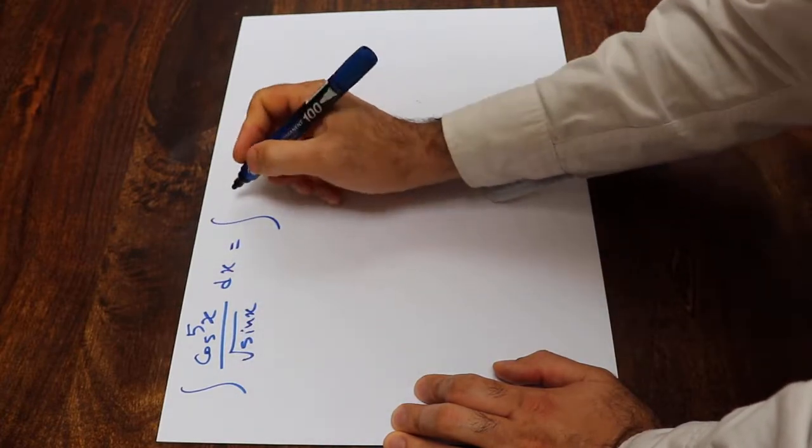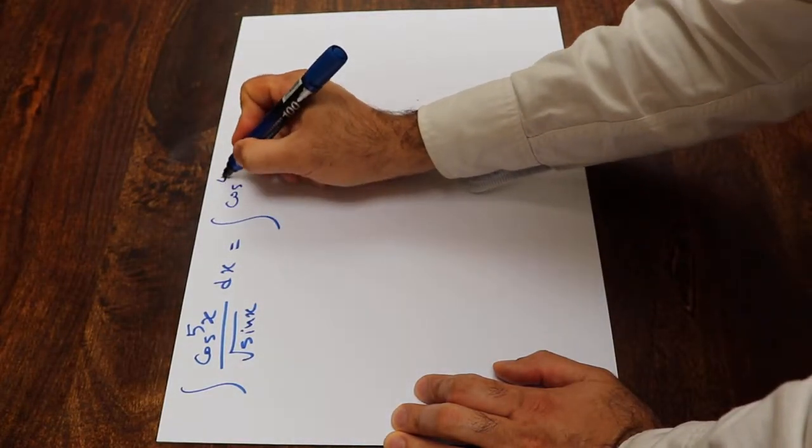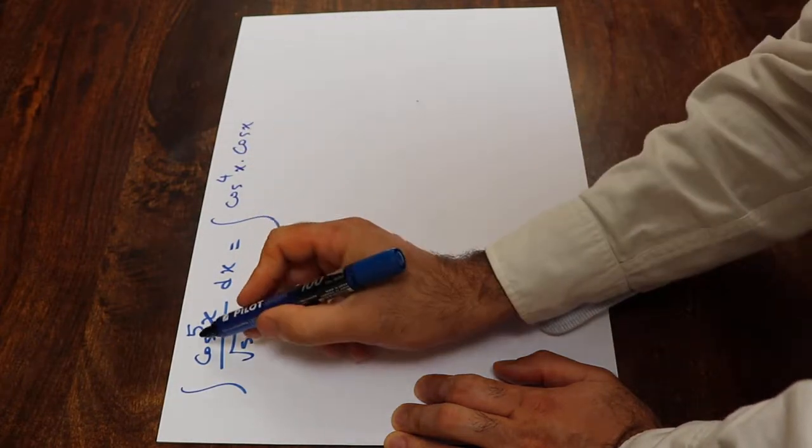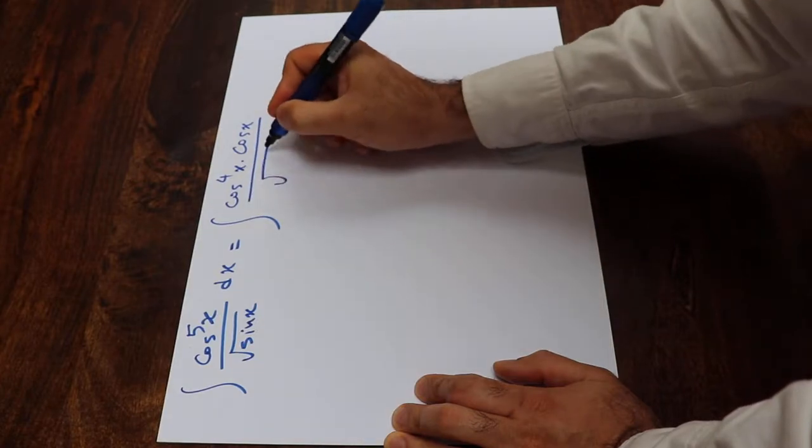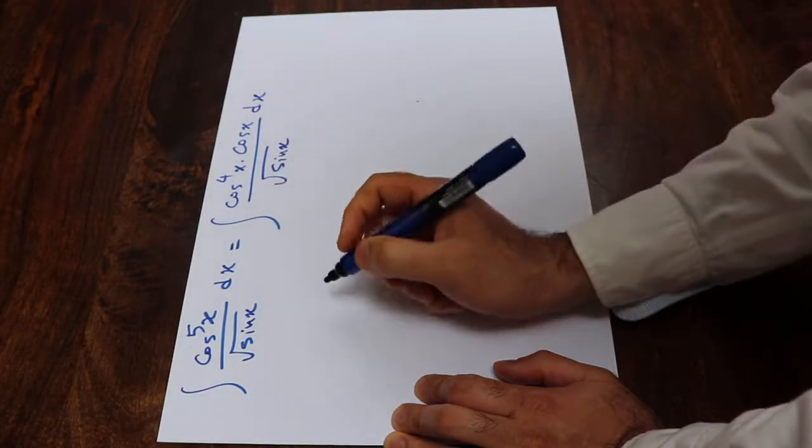Let's rewrite this integral as cosine 4x times cosine x. So instead of cosine 5x, I write cosine 4x times cosine x divided by square root of sine x dx.